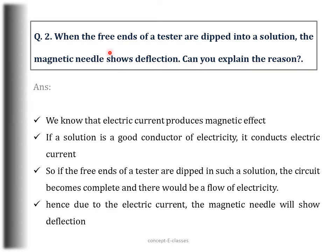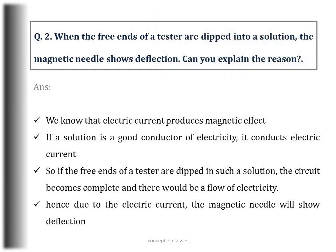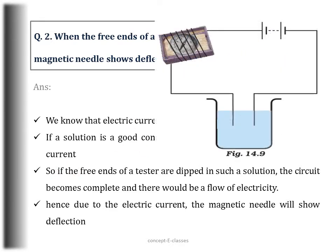Question number 2: When the free ends of a tester are dipped into a solution, the magnetic needle shows deflection — explain the reason. We know that electric current produces a magnetic effect. We saw an example when we kept a compass needle nearby a current-flowing wire; even if the current is small, deflection of the magnetic needle can be seen. So if a solution is a good conductor of electricity, it conducts electric current. If the free ends of a tester are dipped in such a conducting solution, the circuit becomes complete, there is a flow of electricity, and due to that electric current the magnetic needle will show deflection.